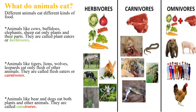Animals like bear, crow, and dogs eat both plants and other animals — they are called omnivores. Even we humans are omnivores because we eat meat and eggs as well as plant products like fruits and vegetables.